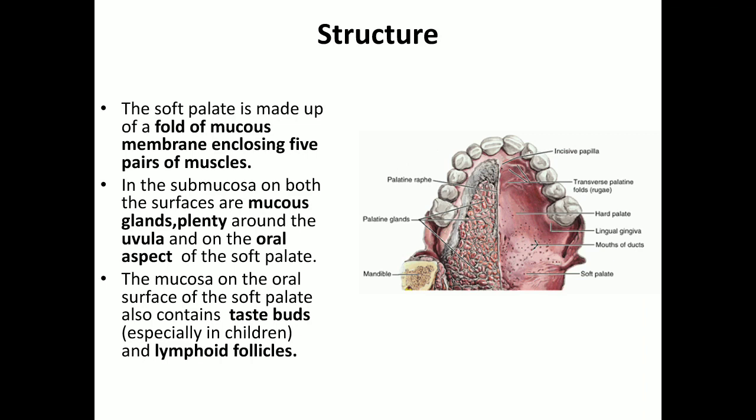The soft palate is made up of a fold of mucous membrane containing five pairs of muscles: tensor veli palatini, levator veli palatini, palatoglossus, palatopharyngeus, and musculus uvulae, all covered by mucous membrane. In the submucosa there are many palatine glands, which are more numerous on the oral surface and near the uvula. Lymphoid follicles and taste buds are also present on the oral surface.